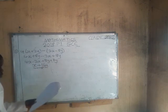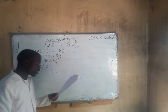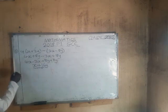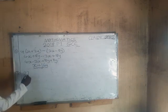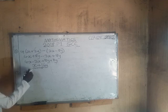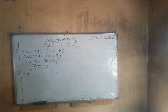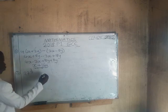Question 2: evaluate 27 to the power of two thirds. This question is under indices, and to answer it we apply the relevant law of indices.